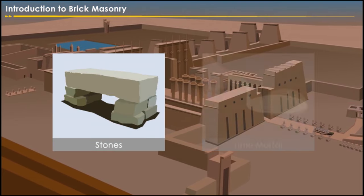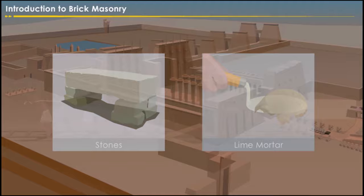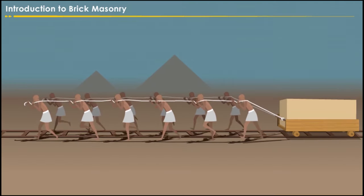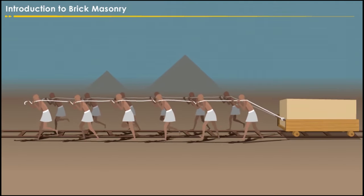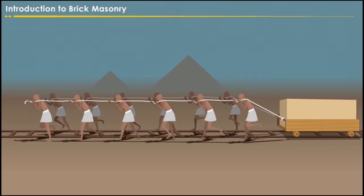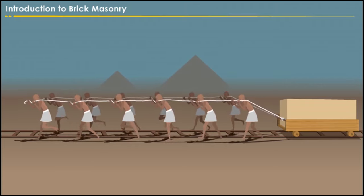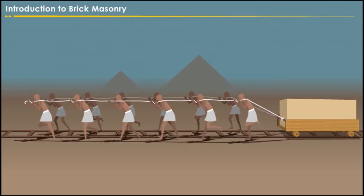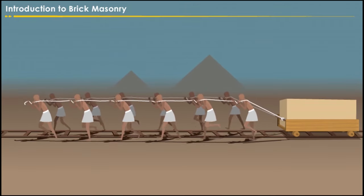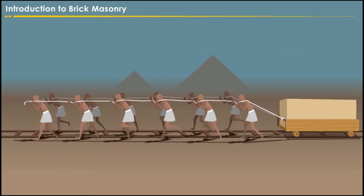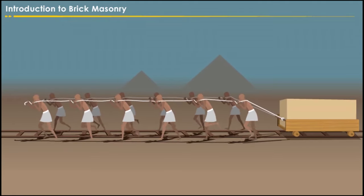In the ancient period, people constructed buildings with the help of stones and lime mortar. But shifting the huge stones was a very tedious process, as the sledges were pulled by a team of laborers and the tracks were kept waxed in order to reduce friction.